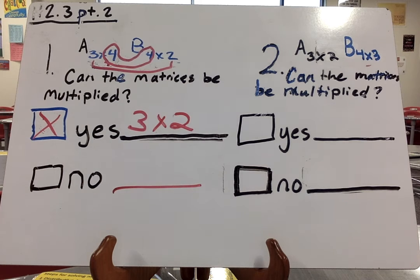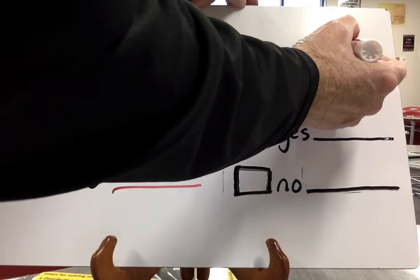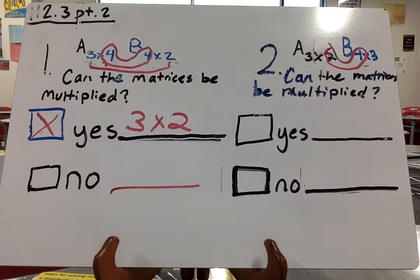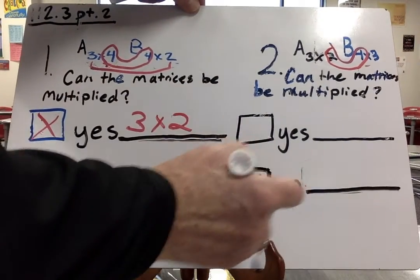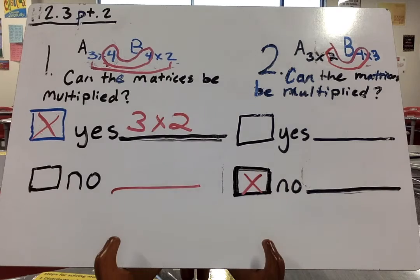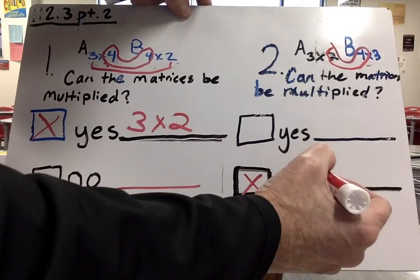We go on to number 2. Can these two matrices be multiplied? A is a 3 by 2, and B is a 4 by 3. Do the 2 and the 4 match? No. So you put no, and what do you put as a solution there? Product dimensions? Undefined.